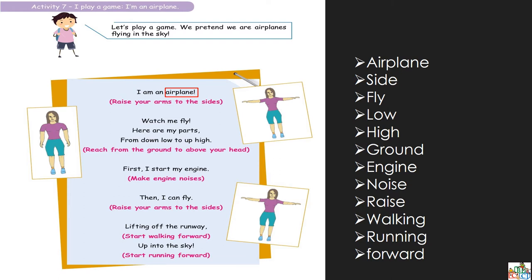So what you're going to do is raise your arms to the sides. Look at the picture — you're going to see a lady. Qu'est-ce qu'elle fait? She is lifting her hands to both sides. Vous allez mettre vos mains tout droit comme ça, comme elle fait. And then you're going to be an airplane.